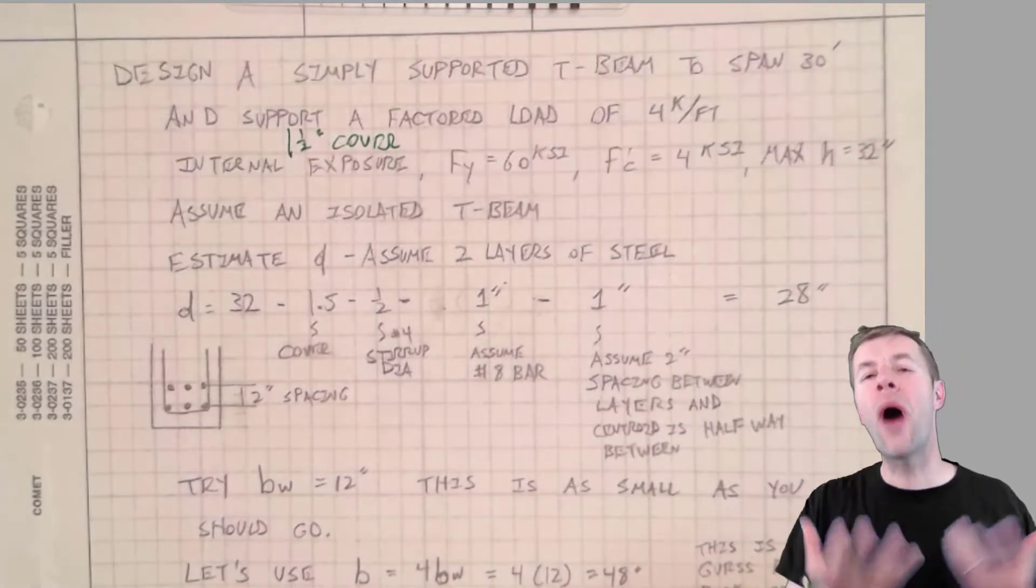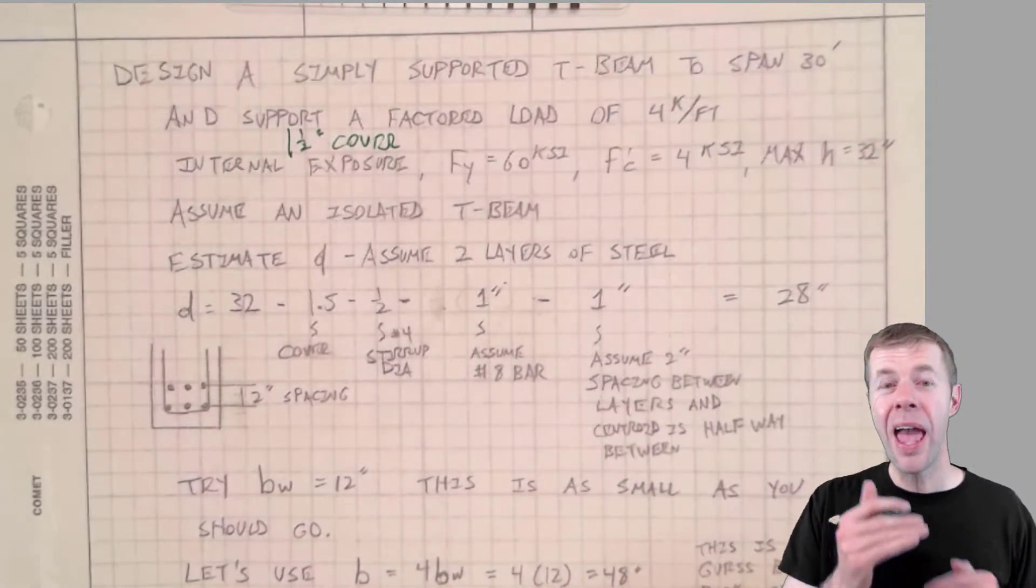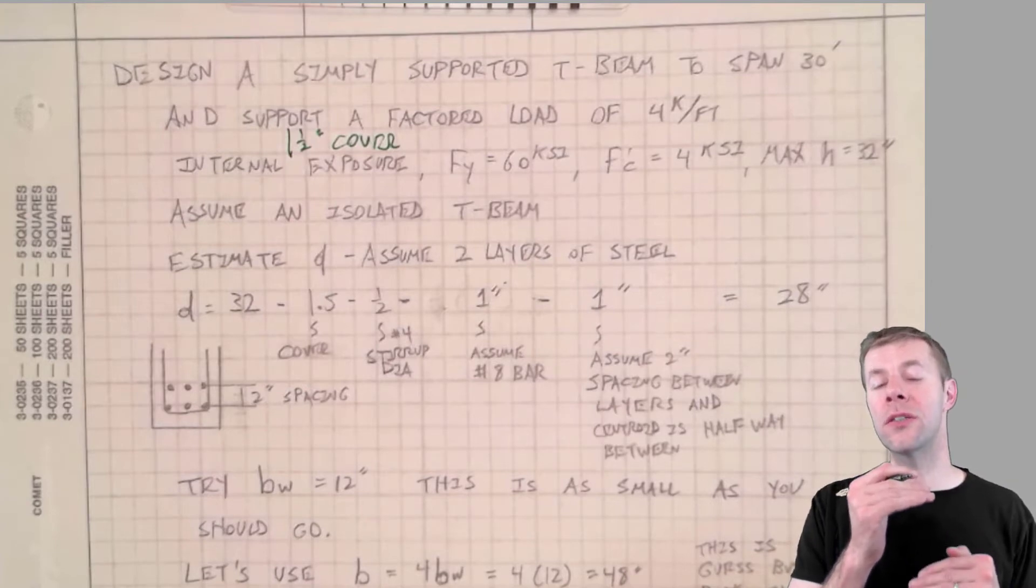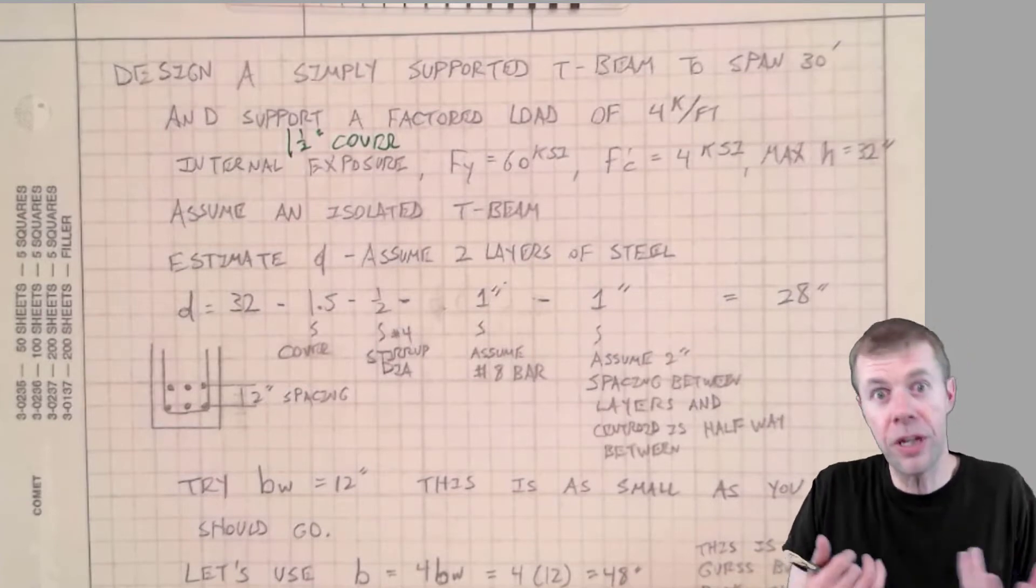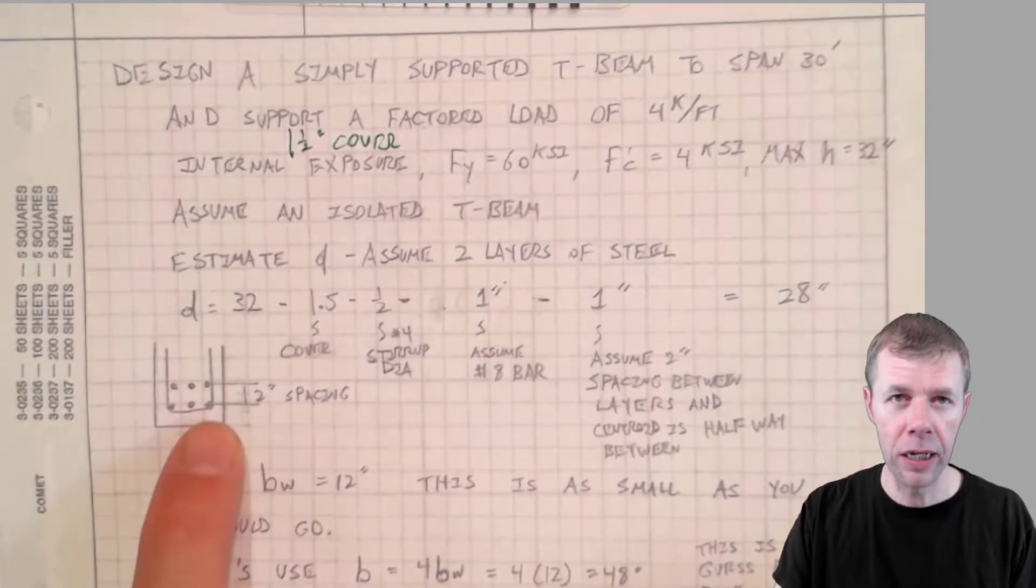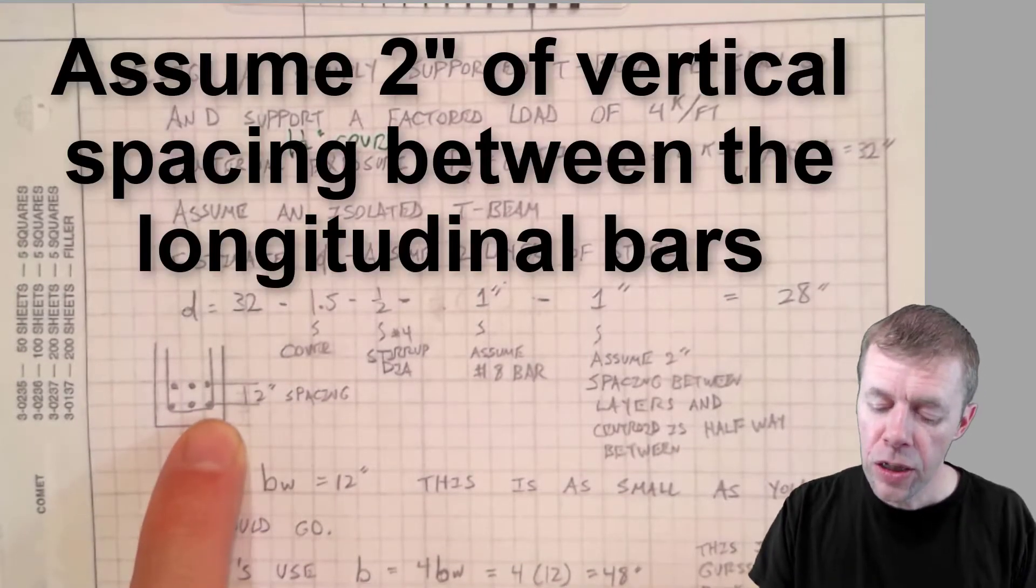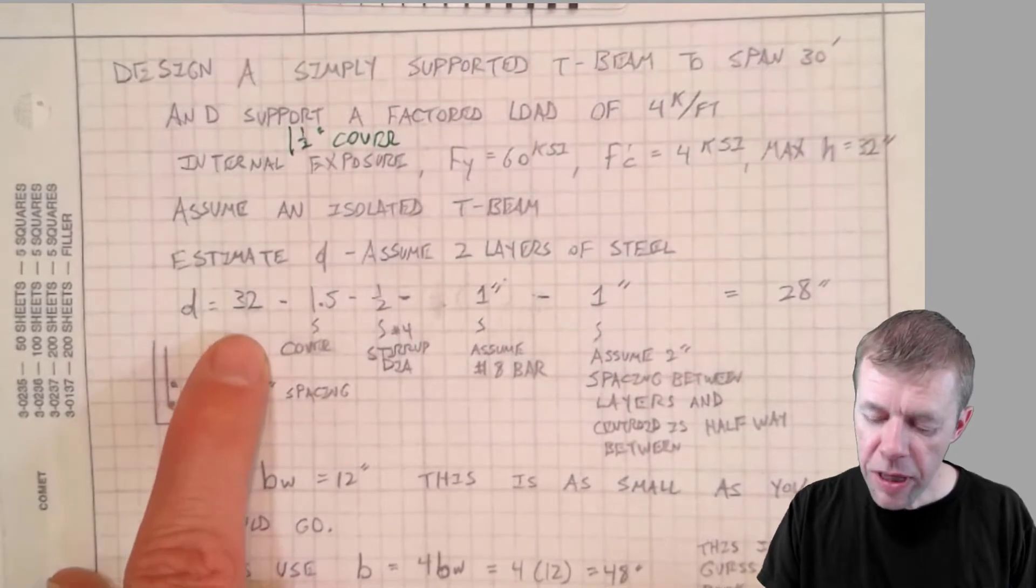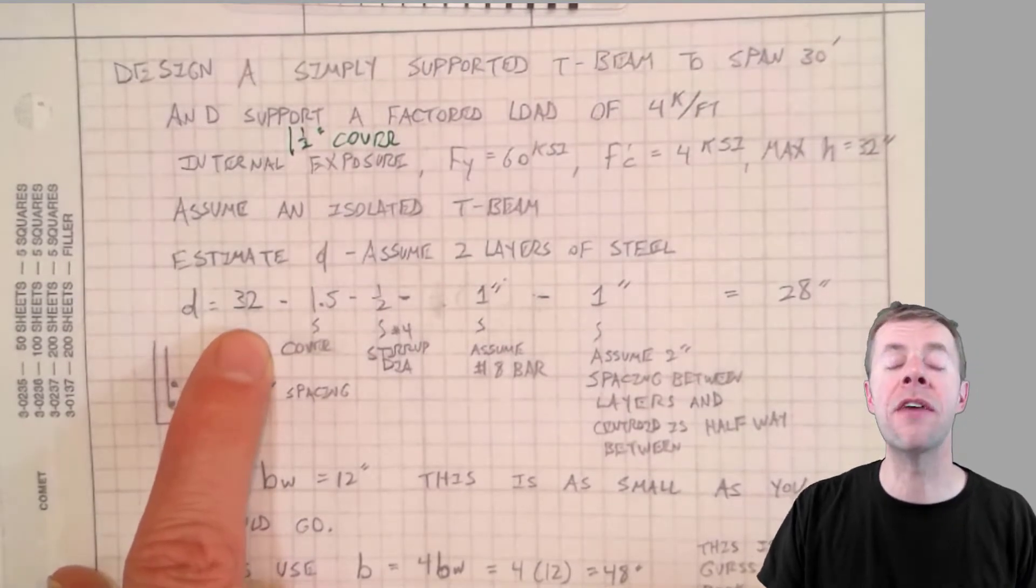We're gonna assume that we're gonna have two layers of steel. Why? Because I've designed quite a few T-Beams, and it's pretty good to assume two layers of steel. If it doesn't work, then go back and do it just for one. We're gonna assume there's two inches of spacing between those layers.